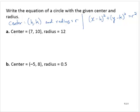So in exercise A, we're told the center is (7, 10) and the radius is 12. So the 7 is my h, the 10 is my k, and 12 is my r.